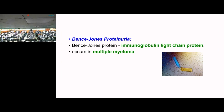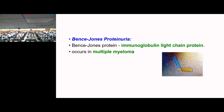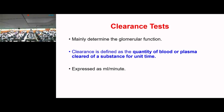An important viva question: Bence Jones protein is an immunoglobulin light chain protein. If this protein is detected in urine, it is a specific indicator of multiple myeloma, a malignancy. This urine test specifically detects this protein.